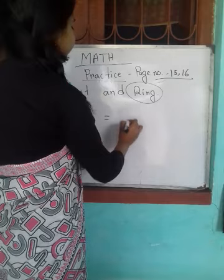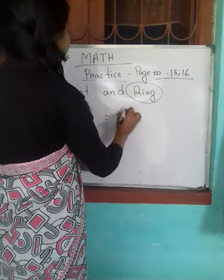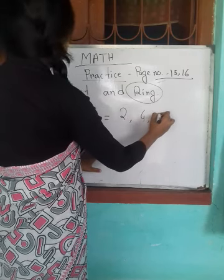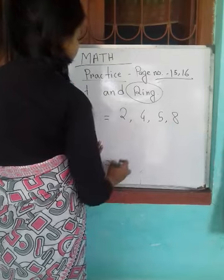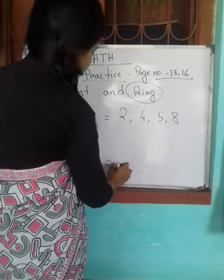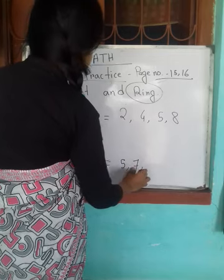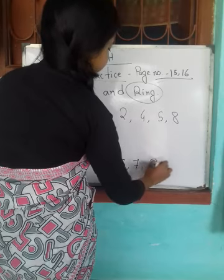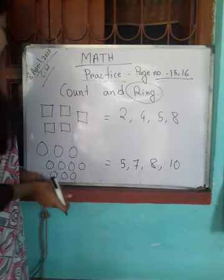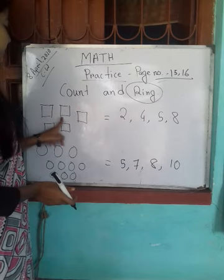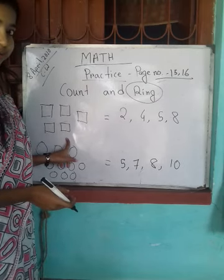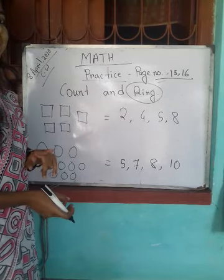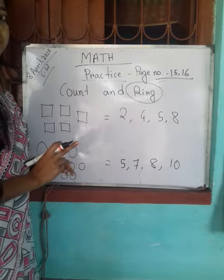How you have to do? There will be few numbers like 3, 2, 4, 5, 8. And here will also be two numbers: 5, 7, 8, 10. Now you have to count these pictures or these objects, and then among these numbers, whichever will be the answer, you will ring that number.